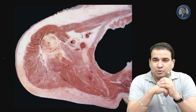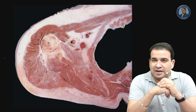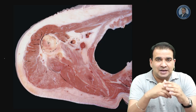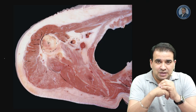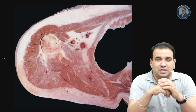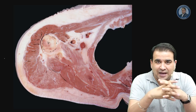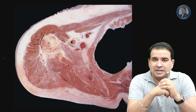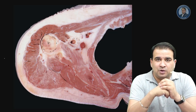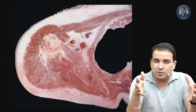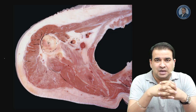Hello everyone and welcome to this RTA (Real-Time Anatomy) video series. This is the second video in the series and today we will be talking about the section of the axilla. A few years back there was a question asked in the AIIMS exam in which the structures of the axilla had to be identified in the transverse section.